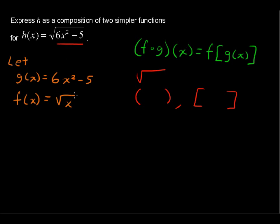So in this case, we put this entire 6x² - 5 into the radical. Okay, so if those are our functions, then we can say this is the composite form. So f(g(x)) equals our original h(x).